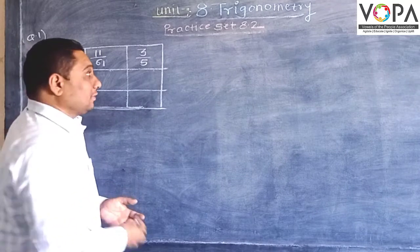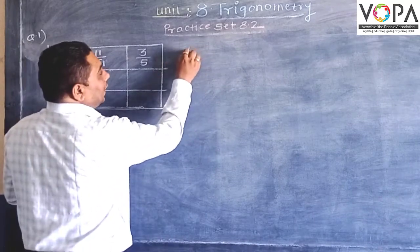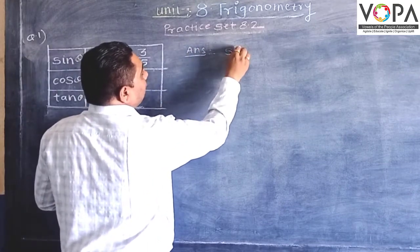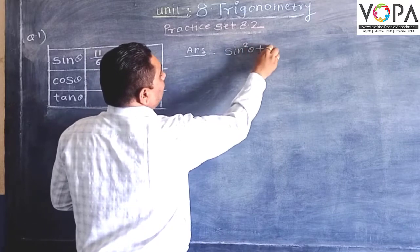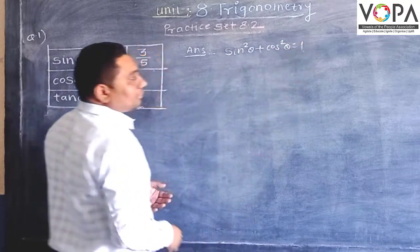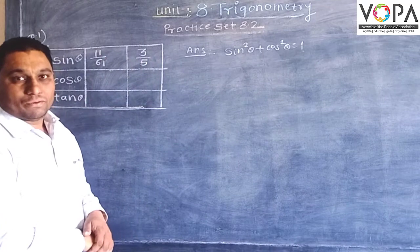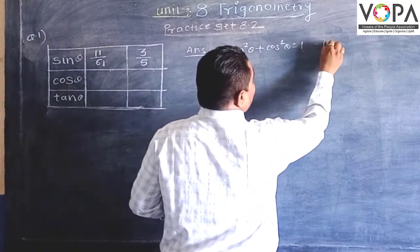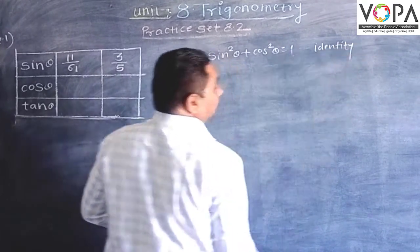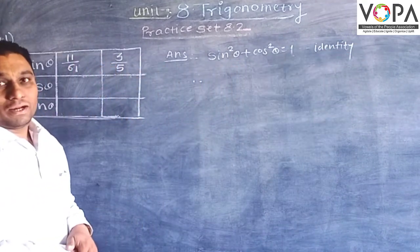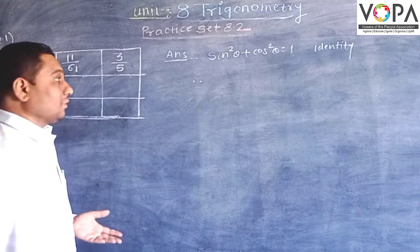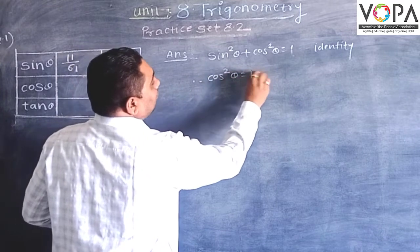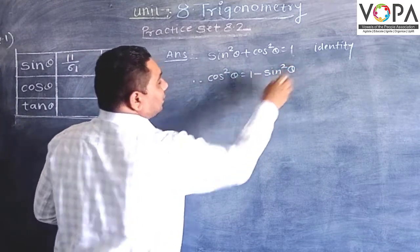Now let us see how we can find out. We know the identity that is sin square theta plus cos square theta, which is equal to 1, to find out the value of cos theta. Therefore, cos square theta is equal to 1 minus sin square theta.